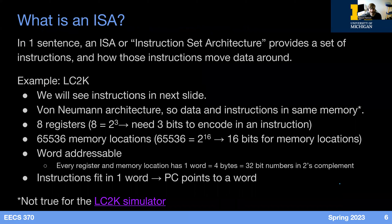Now let's actually get into the project. The whole point is to implement three main components of an ISA. An ISA — Instruction Set Architecture — gives us a set of instructions and tells us how those instructions move data around. That's the architecture part, defining where different things go. Our big example for this semester will be LC2K. LC2K is a von Neumann architecture, meaning data and instructions are in the same memory.